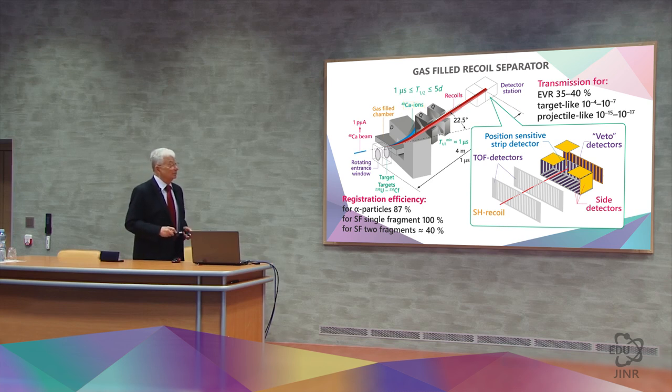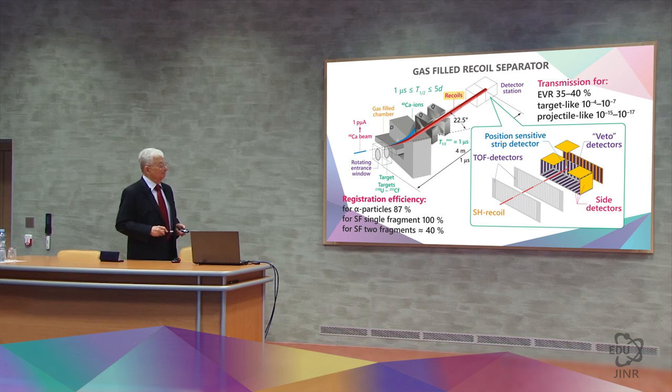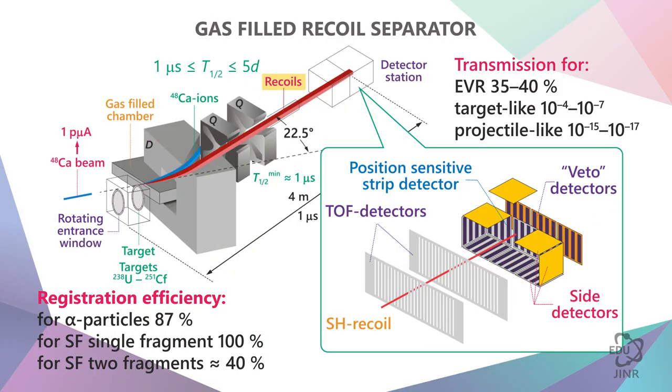While the slow-moving recoil nucleus loses little charge, has a large magnetic rigidity and can be collected on the focal plane. And from here to here is a distance of 4 meters. The recoil nucleus moves through these 4 meters in one microsecond.